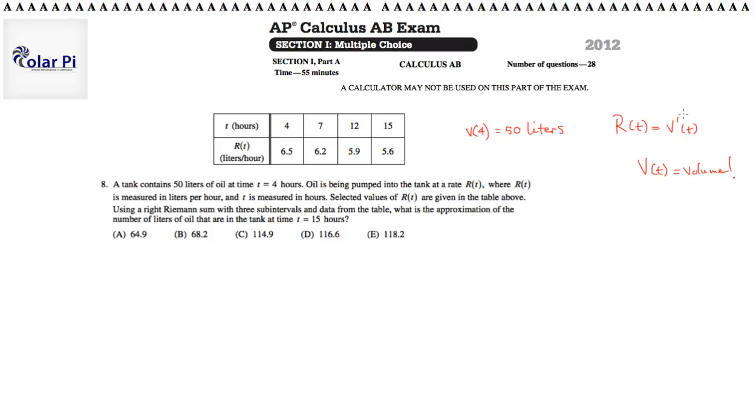So, if v of t is volume, v prime, the rate of change of volume is what we're referring to as r of t here. So, oil is being pumped into the tank at a rate r of t. Where r of t is measured in liters per hour. That makes sense. So, if the volume is in liters, then in liters per hour. Seems about right.